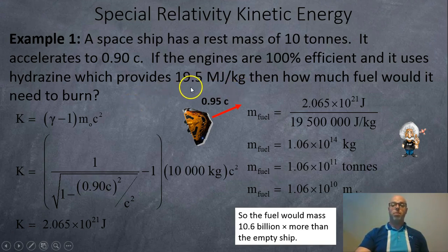I looked up hydrazine on the internet and Wikipedia, and the energy intensity is 19.5 megajoules per kilo. Here we got our formula for kinetic energy. We want to accelerate up to 90% of the speed of light, so we plug in 0.90 into our gamma factor. And we find that if you reach 90% of the speed of light, you're going to get 2.065 × 10²¹ joules. That's a lot of joules.